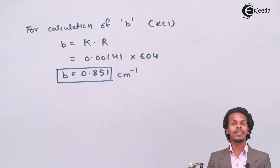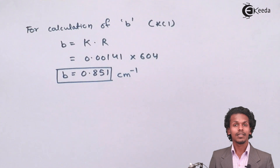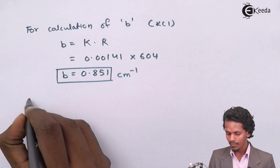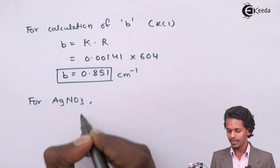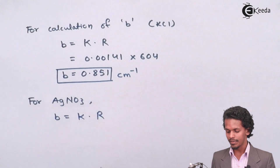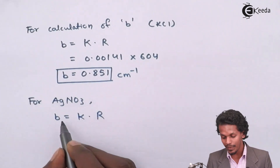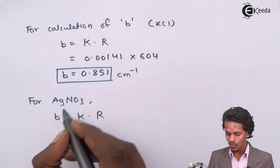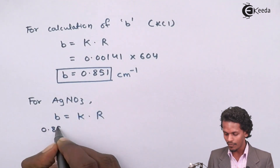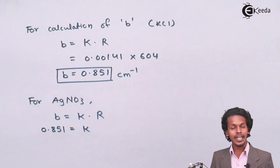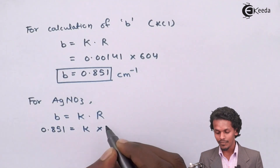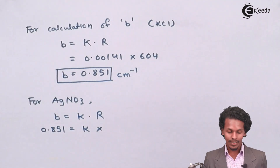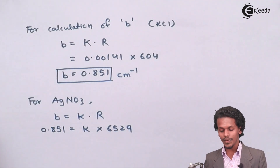This value of B will be very helpful in calculating the conductivity for the AgNO3 solution. For AgNO3, we again use B equals K into R. The cell constant B is 0.851, which is constant for both cells since the same cell is used. The conductivity K for AgNO3 is unknown, but the resistance of AgNO3 is given as 6529 ohms, so we can calculate K from this.